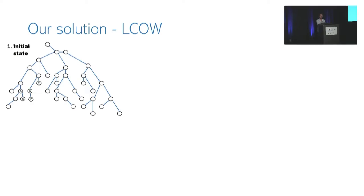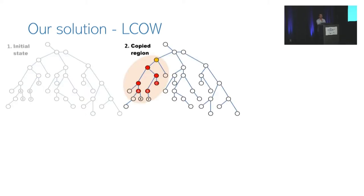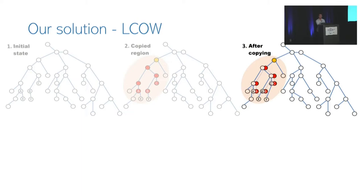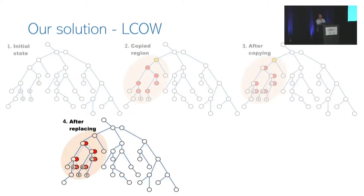When an updating operation needs to update nodes A, B, and C according to the original sequential implementation, it first copies those nodes and all nodes in the path between them and their lowest common ancestor. The operation also locks these nodes and the parent of the root of this subtree. The process of copying and locking is done by tracking the tree's accesses to memory and deciding which accesses should trigger copying logic. Then the operation updates the copies of A, B, and C, and commits by atomically replacing only the copied lowest common ancestor with its copy.